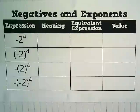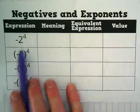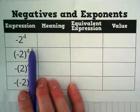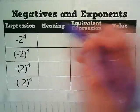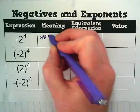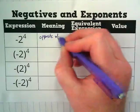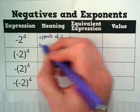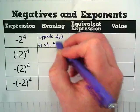Okay, so when we have negative 2 to the fourth power and no grouping symbol or parentheses there, it means opposite of 2 to the fourth power.